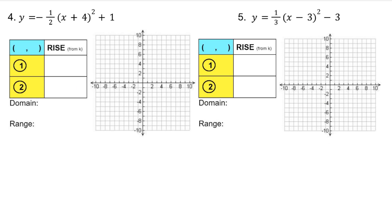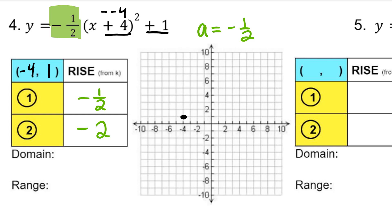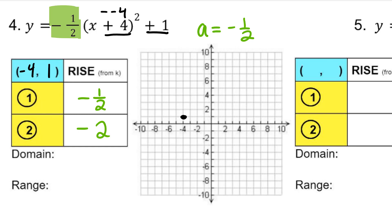For number 4, determine your vertex and your rise, then graph it. Graph the vertex at (-4, 1). Keep in mind that even though the rise is a fraction, this is not slope — this is not a rise over run situation. We are running one unit or two units away from the vertex, and the rise is only the change in y. Moving one unit to the left or right, rise negative 1.5, so go down 1.5. Moving two units away from the vertex, our rise will be down 2 in each direction.